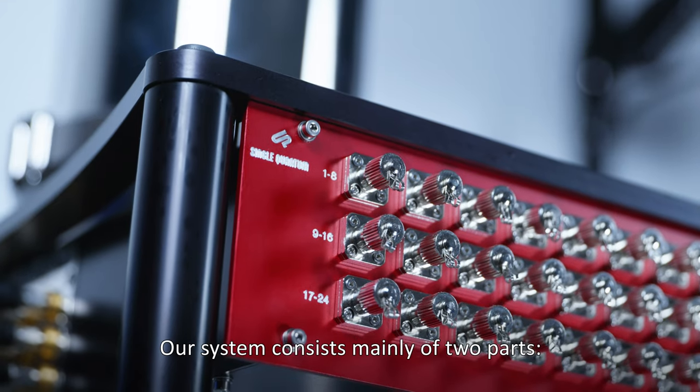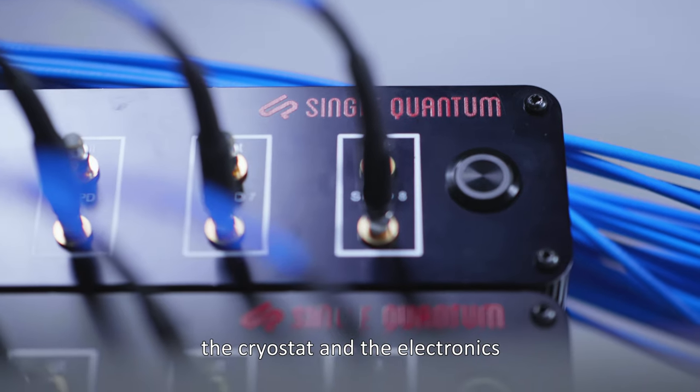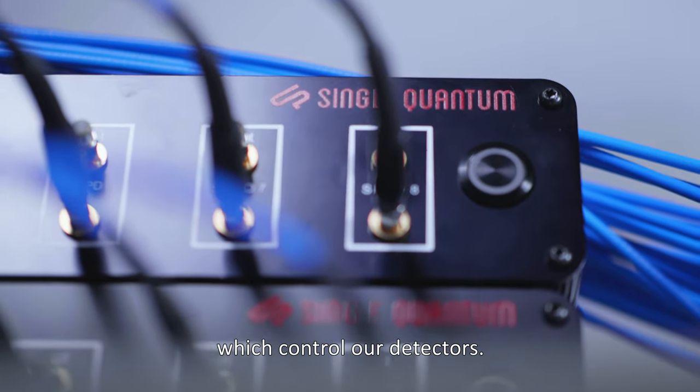Our system consists mainly of two parts: the cryostat and the electronics which controls our detectors.